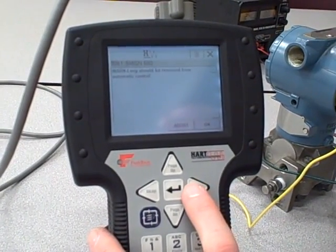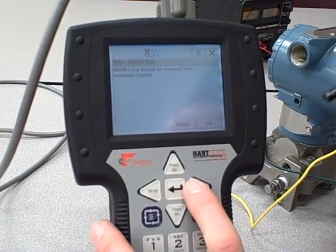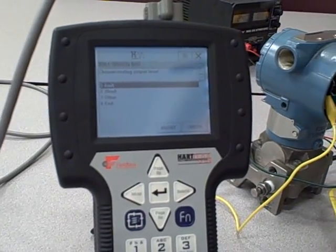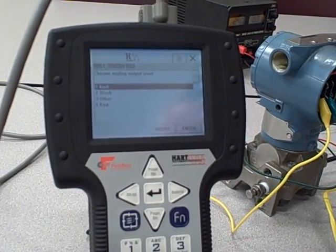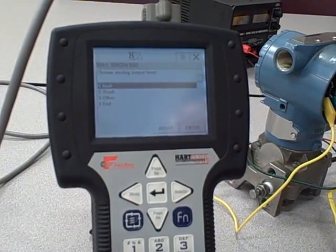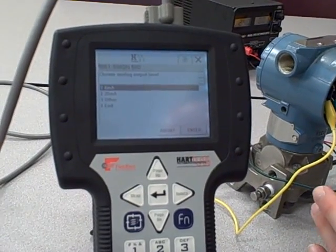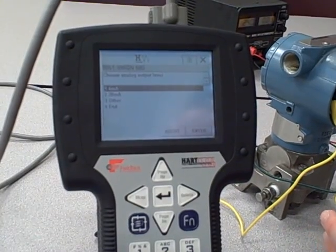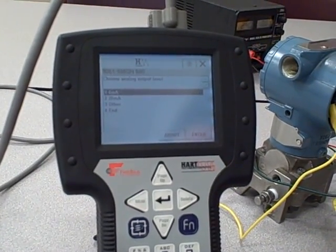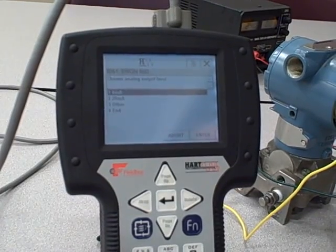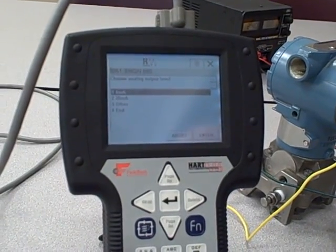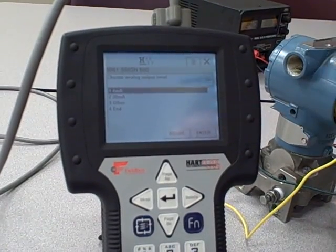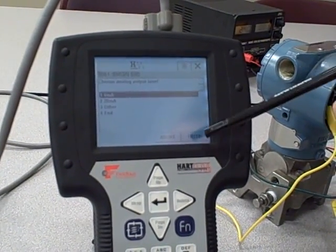It gives you the obligatory warning - the loop should be removed from automatic control. Choose the analog output level. What the loop test feature allows us to do is force the analog current output signal to whatever value we wish, so it will ignore the applied pressure. This is great for checking out loops that are having problems. You can tell the transmitter to go directly to either 4 milliamps exactly, 20 milliamps exactly, or some other value.